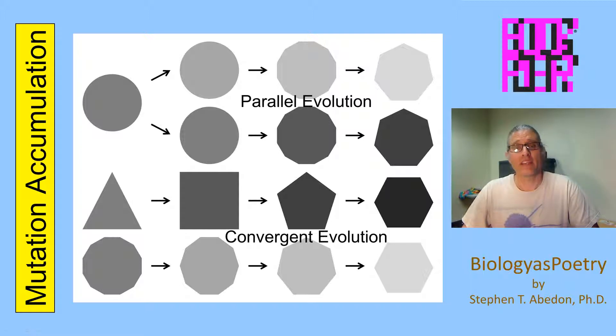Ultimately, evolutionary biology gives rise to profound adaptations because mutation is followed by natural selection, which is followed by mutation, which is followed by natural selection and so on.